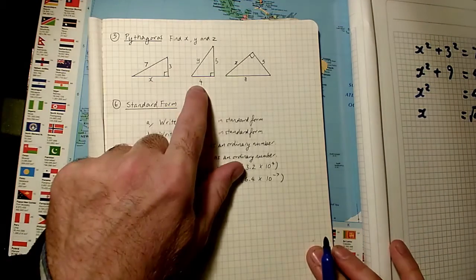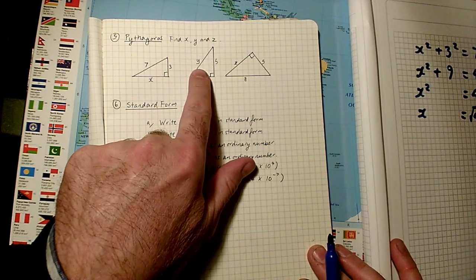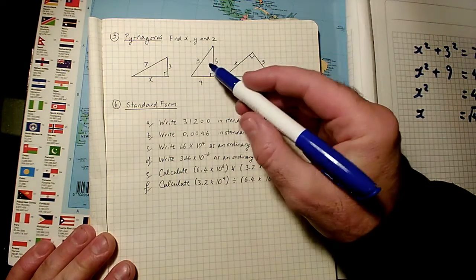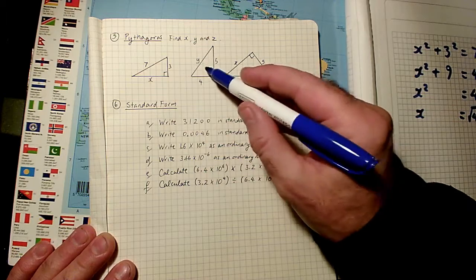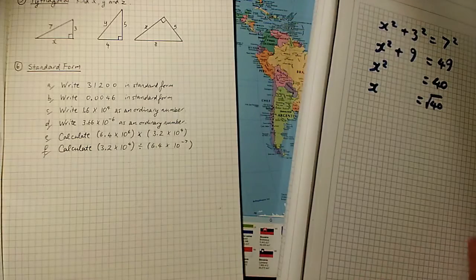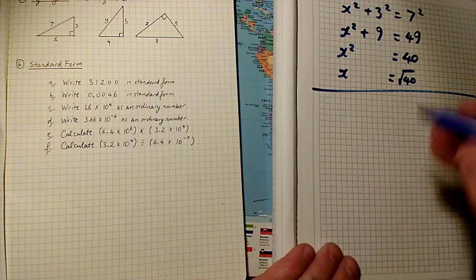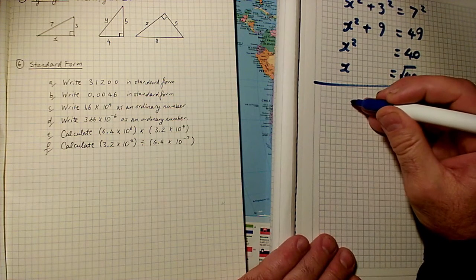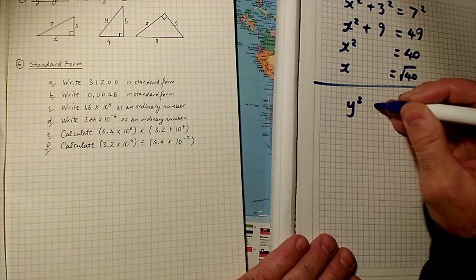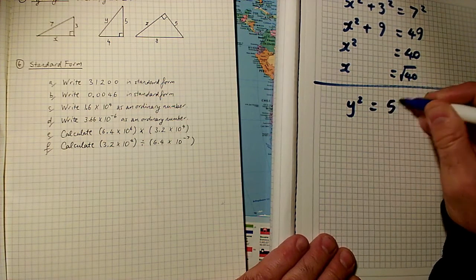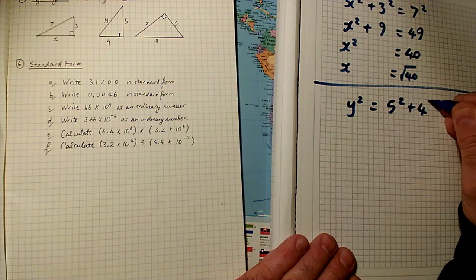On to the next question. This time, the missing one is y, and that's the longest side on this occasion because it's opposite the 90 degree angle. So again, I'm going to write Pythagoras.